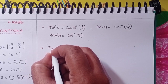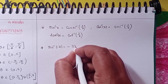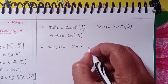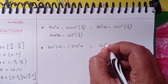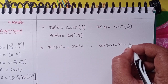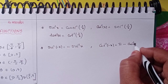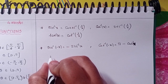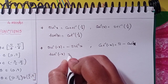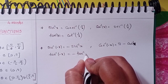sin⁻¹(−x) = −sin⁻¹(x). cos⁻¹(−x) = π − cos⁻¹(x). tan⁻¹(−x) = −tan⁻¹(x).